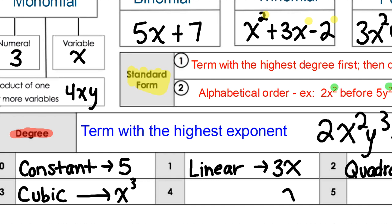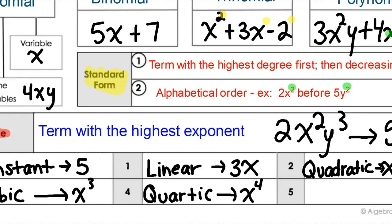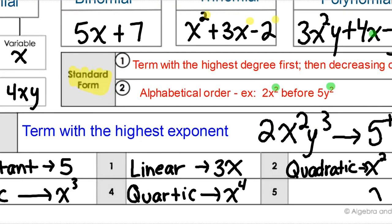Fourth degree — having something to the fourth power as your highest exponent — this is the one that sounds like quadratic — it's called a quartic. So it sounds similar, but it's a different word: quartic. And then the last one would be fifth degree, so that would be like x to the fifth power as your highest exponent in your polynomial — we call that a quintic. Like quintuplets is five babies, so quintic is fifth degree.